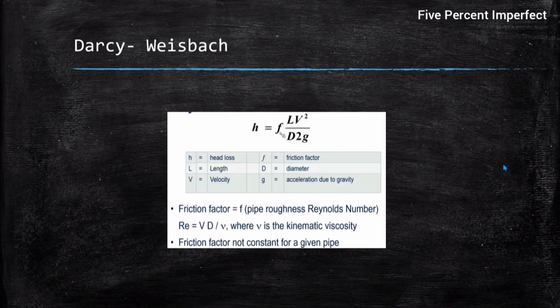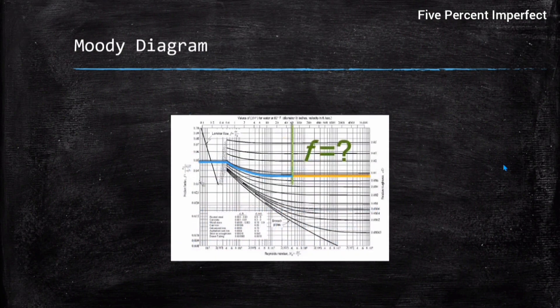Darcy-Weisbach was developed approximately 170 years ago, and at that time a proper methodology for calculating f had not been developed. Later, Moody showed that based on Reynolds number the friction factor for various materials can be calculated, represented in the Moody chart. For more details on calculating the friction factor, a quick Google search is recommended.